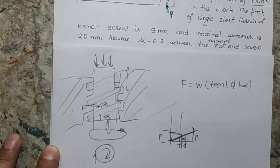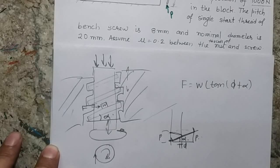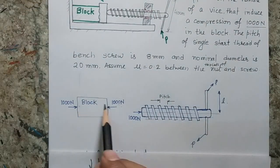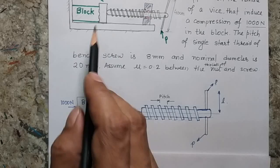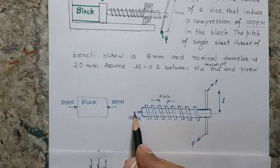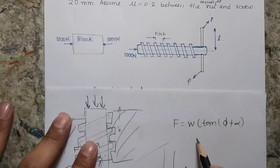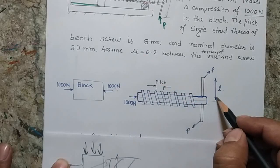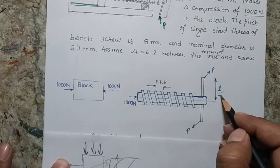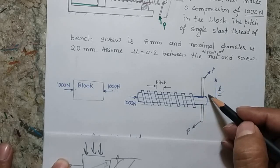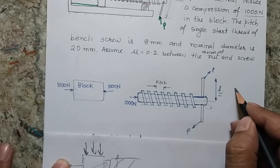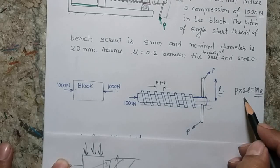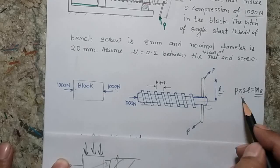Now let's apply this model to our bench vise problem. There is a block with a 1000 Newton compression force. Because of the motion of the screw, an equal and opposite force acts on the screw surface, which is considered as the load W in this formulation. The pitch is 8 mm. The lever has a half-length L, so the net moment on the screw from the lever is P × 2L. We need to correlate this lever moment with the screw friction formula.